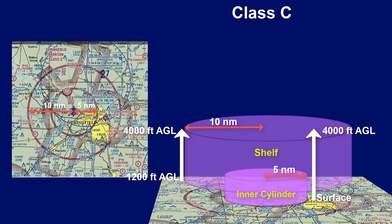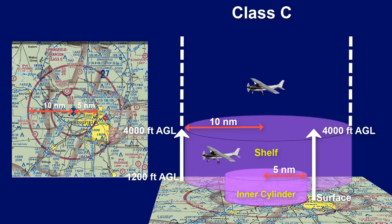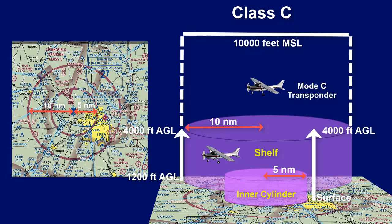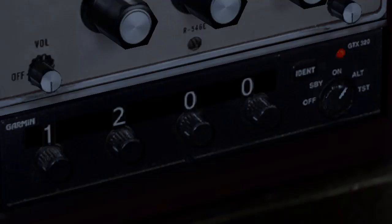As long as you fly outside of the airspace — meaning over the top, to the side, or underneath the shelf — no communication is needed. However, if you fly in Class C airspace or above the lateral boundaries of Class C airspace up to 10,000 feet MSL, you must have a Mode C transponder, which includes pressure altitude feedback allowing ATC to see your flight level altitude on their radar screen. Set your transponder to ALT or altitude mode, which is Mode C.